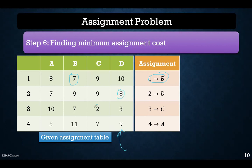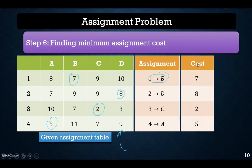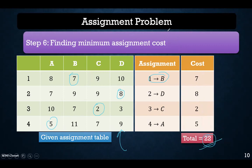For 2-D the cost is 8 units, for 3-C it is 2 units, and for 4-A it is 5 units. So the assignment costs are 7, 8, 2, and 5. Adding these costs together, the minimum assignment cost obtained by using the Hungarian method is 22 units.